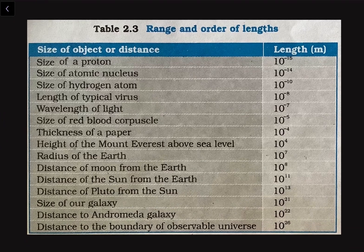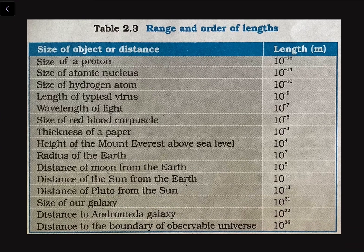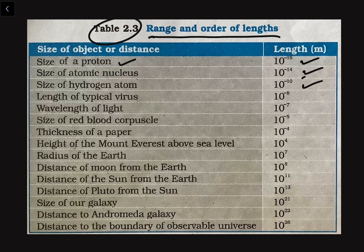Let me show you Table 2.3 from your book — the table for the range of lengths. It lists: size of the proton as 10 to the power minus 15 meter, size of the atomic nucleus as 10 to the power minus 14 meter, size of hydrogen atom as 10 to the power minus 10 meter (one angstrom), and length of a typical virus among others. You can refer to this table in your textbook.